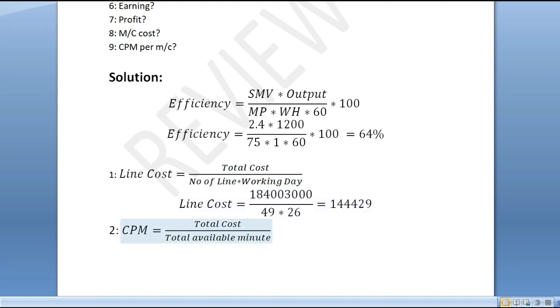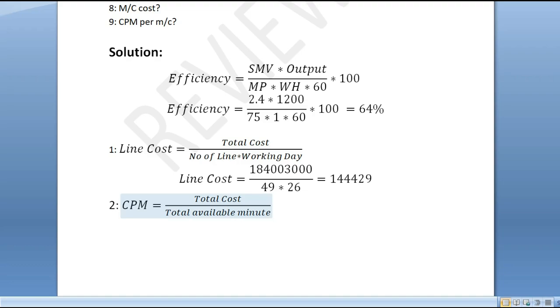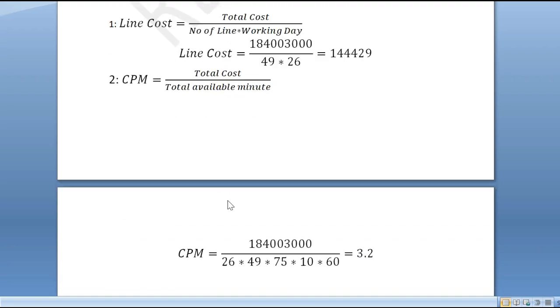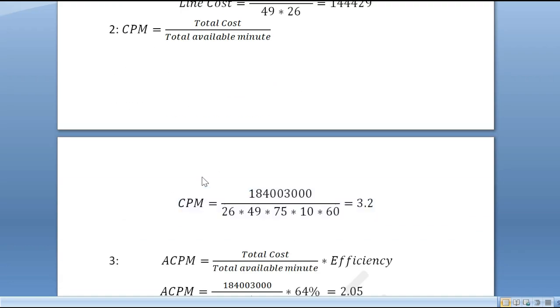Line cost equals total cost divided by total available minutes. This is the available minute calculation with total working hours. That's 26 days times 49 lines, per line 75 workers, per day working hour 10 times 60. So the cost per minute is 3.2. This is the CPM.